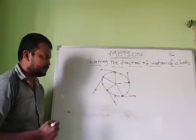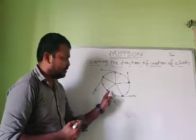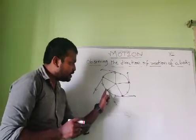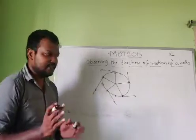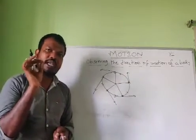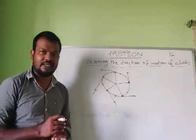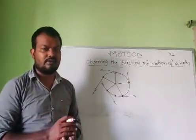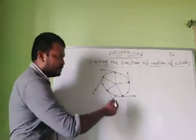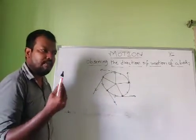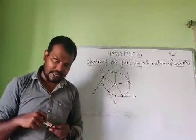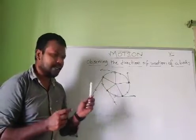So the body is moving in a circular path, and each and every point is having a specified direction in the circular path. The point where you are releasing the ball is called as nothing but a tangent. The straight line which touches the circle at only one point is called as nothing but a tangent. This is touching the circle at this point, this is touching the circle at one point — so these are all called as nothing but tangents. So if any body is moving in a circular path, if you leave the body, that body will move in a straight line, because every point of the circle is having a particular direction.